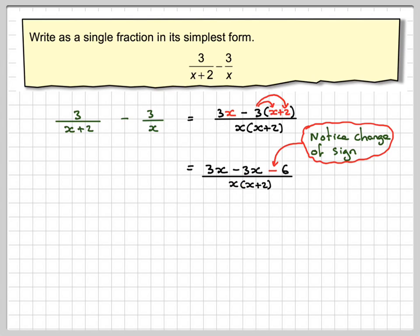So 3x take away 3x, they're going to cancel each other out. And we're going to leave it with minus 6 over x times x plus 2. This is now a single fraction.